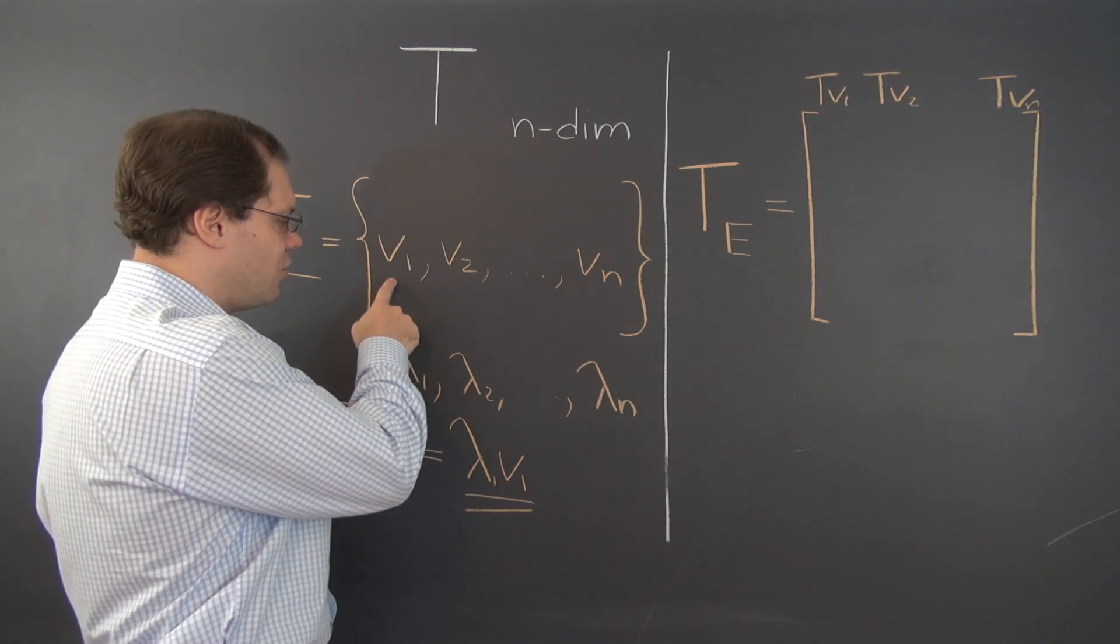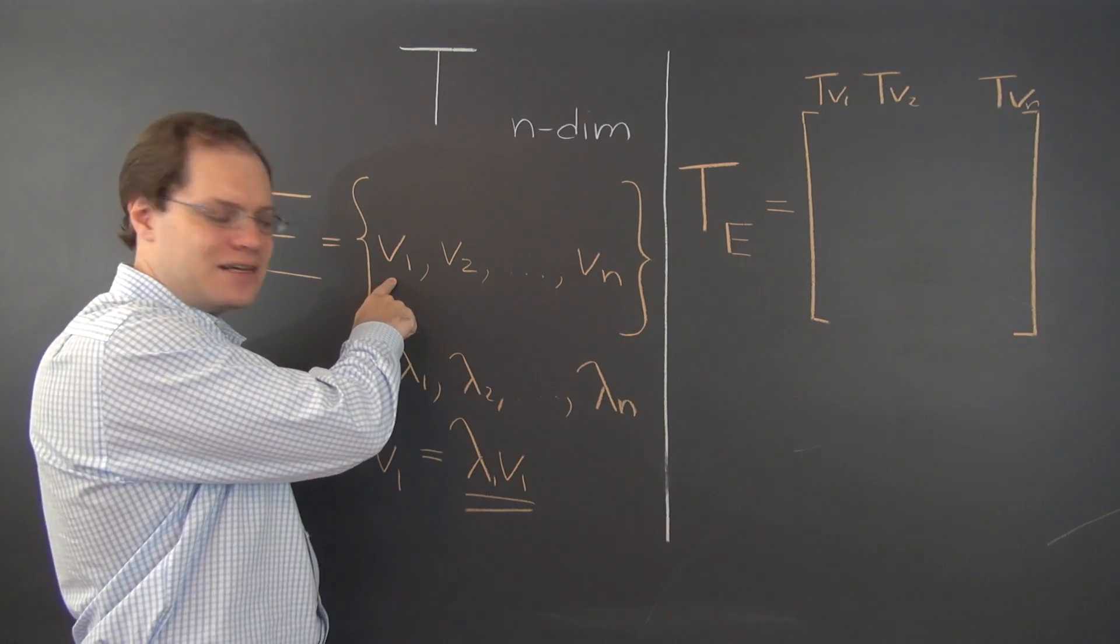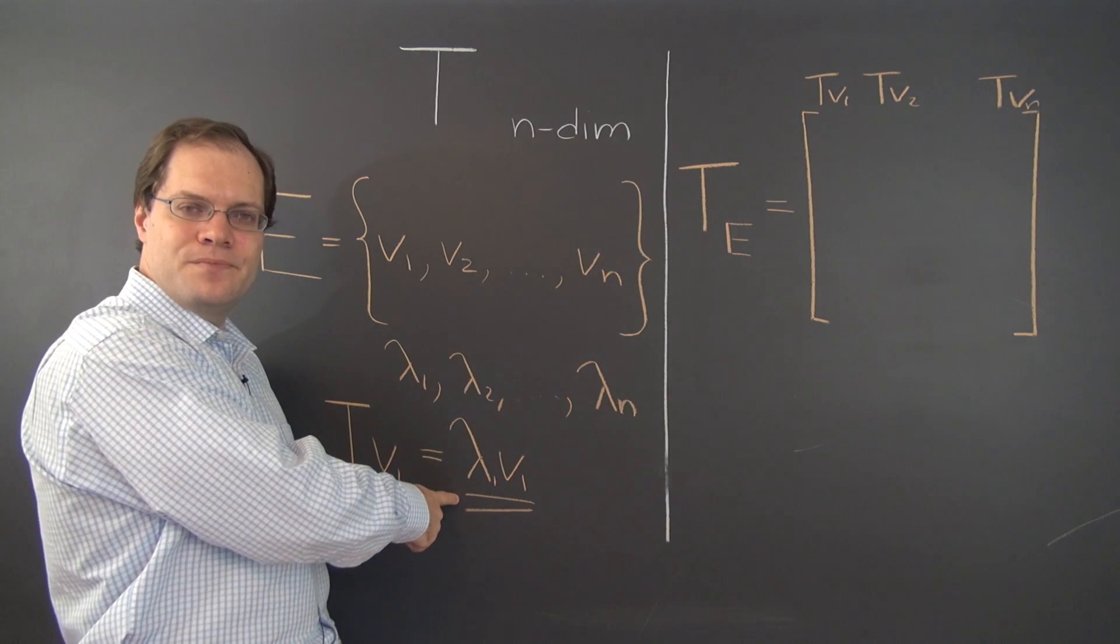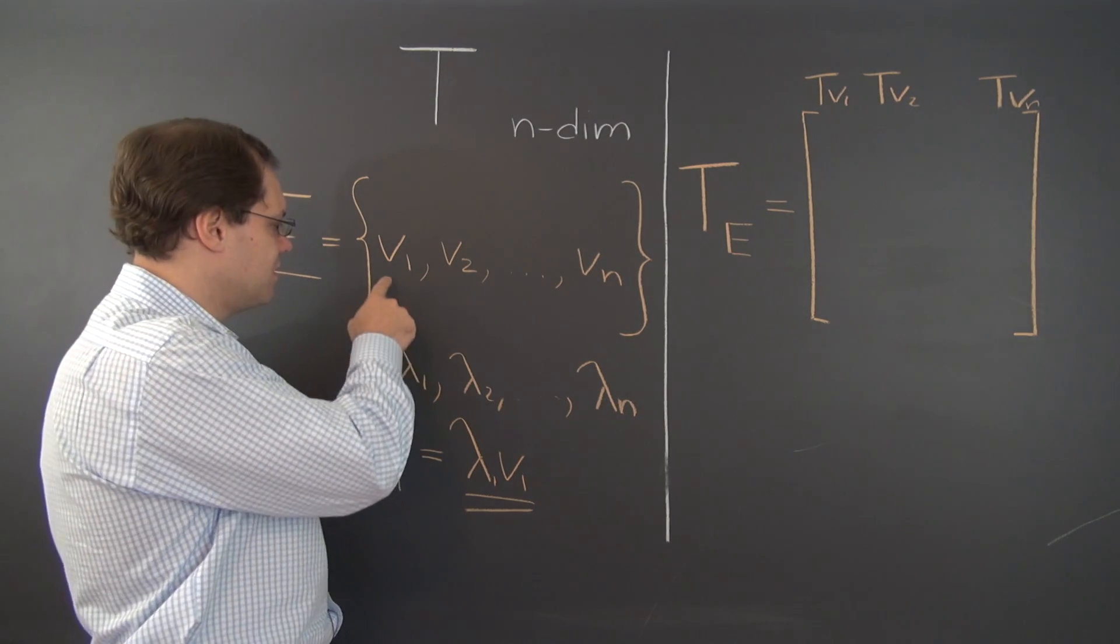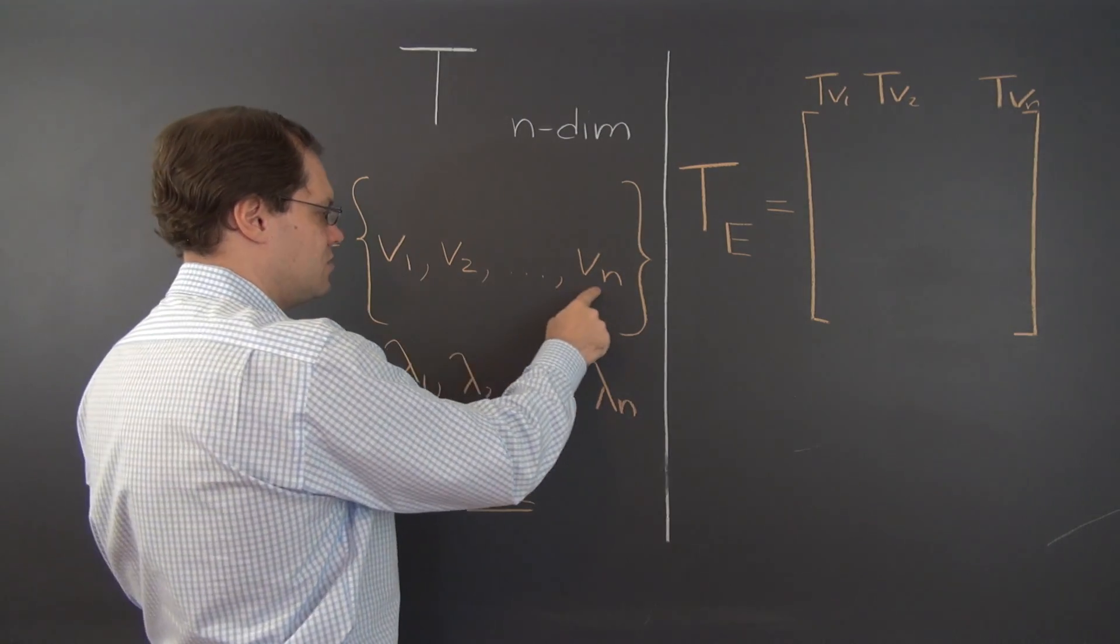well, you know that all you need is just lambda 1 of this vector. Because lambda 1 of V1 is precisely what we're trying to decompose. So our coefficients will be lambda 1, 0, 0, 0, 0, 0.